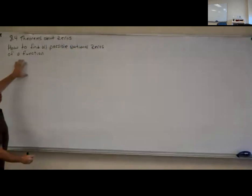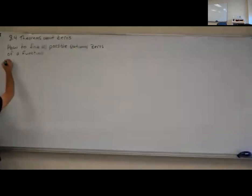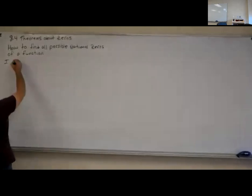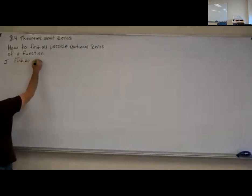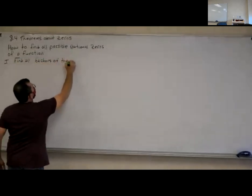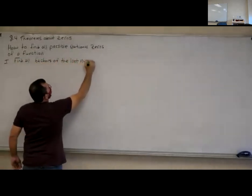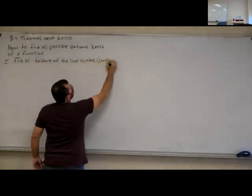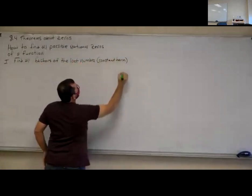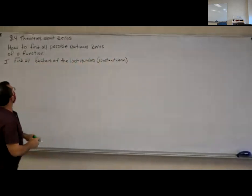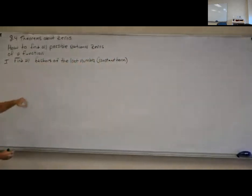So to find all the possible zeros of a function, the first thing you do is find all the factors of the last number. We also call that the constant term, because that's the number at the end and it doesn't have any variables with it. So we're going to find all factors of the last number.